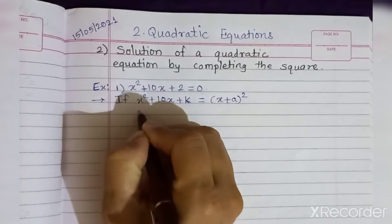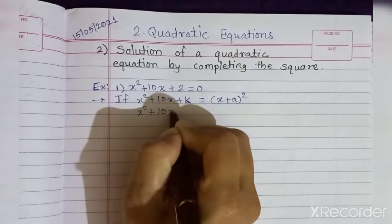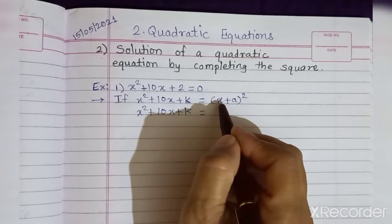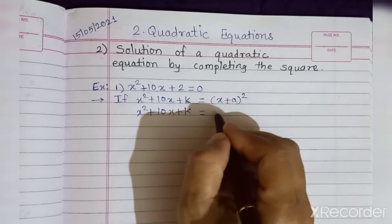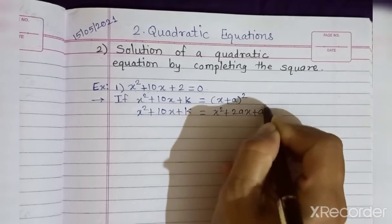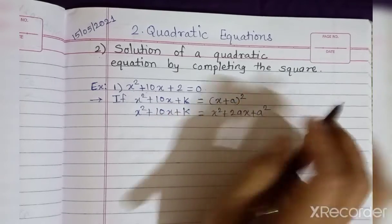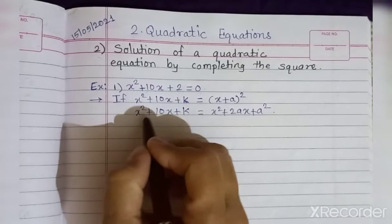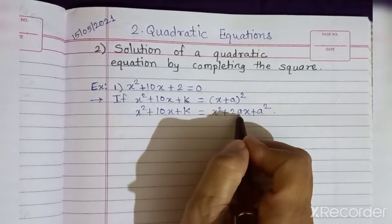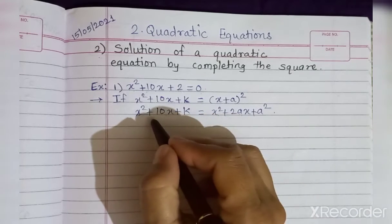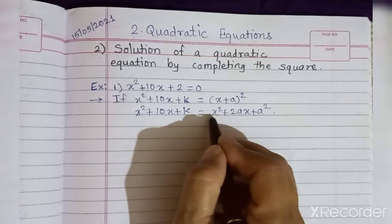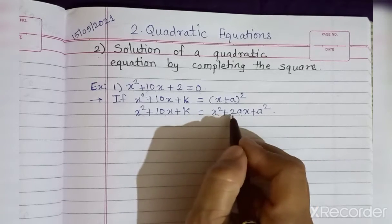So we write: x² + 10x + k = (x + a)². Now open the bracket on the right side: (x + a)² = x² + 2ax + a². After expanding the right side, we now compare the first two terms of the left-hand side with the first two terms of the right-hand side.